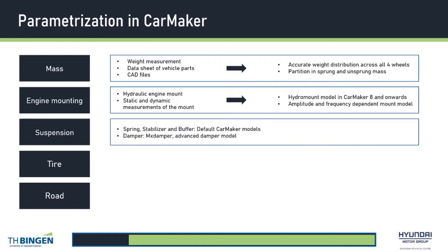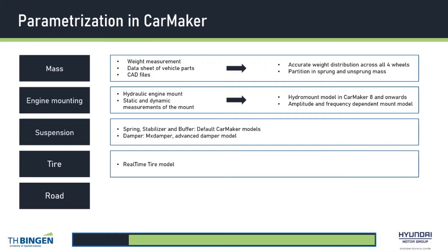As for the suspension components, for the spring and buffers, the information from the data sheet was directly applied in the built-in spring and buffer model of CarMaker. As for the damper, instead of using the built-in damper model, a more complex and slightly more advanced MX damper model was used. As for the tire model, due to limited tire data and the requirement of this simulation being real-time capable, the readily available real-time tire model with tire data generated from the IPG tire data set generator was used in the simulation.